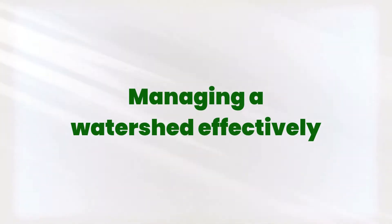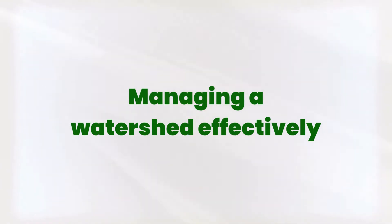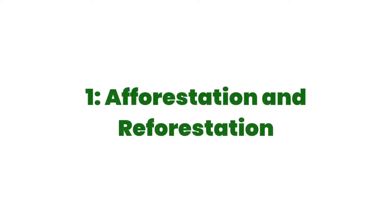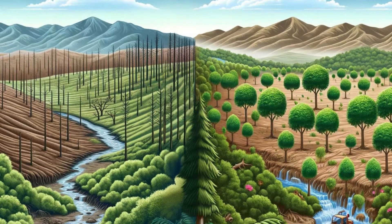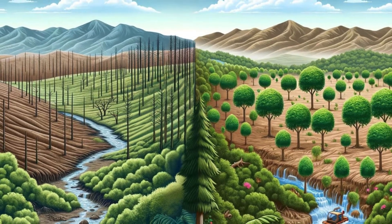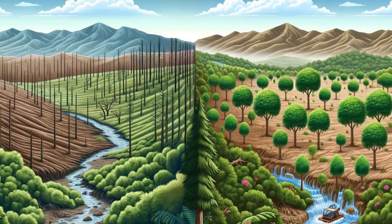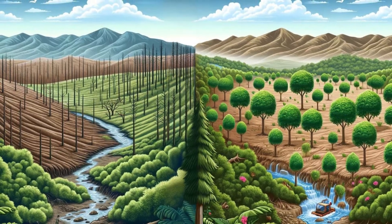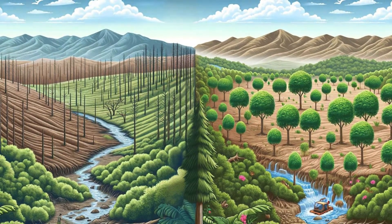Managing a watershed effectively involves several techniques. Let's discuss some of the key ones. Afforestation and reforestation — planting trees helps in reducing soil erosion, increasing water infiltration, and maintaining biodiversity.